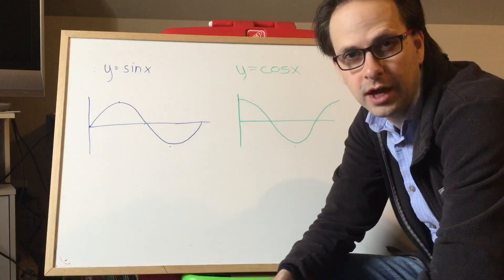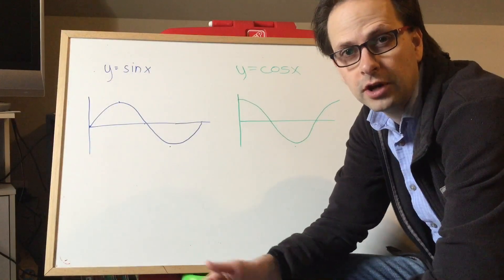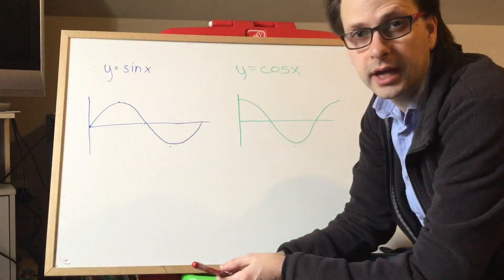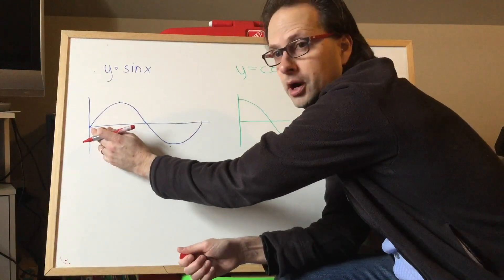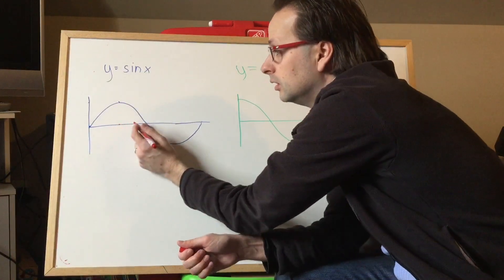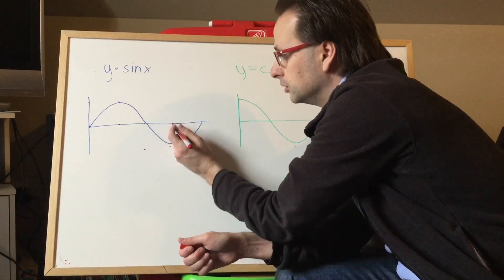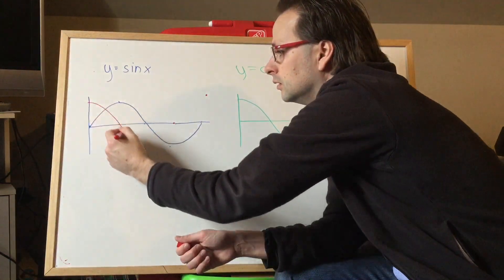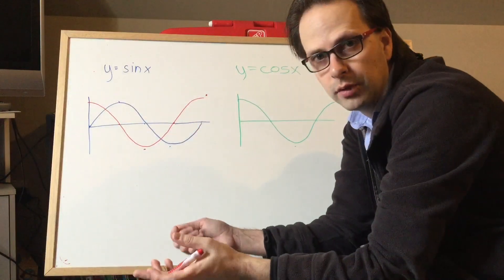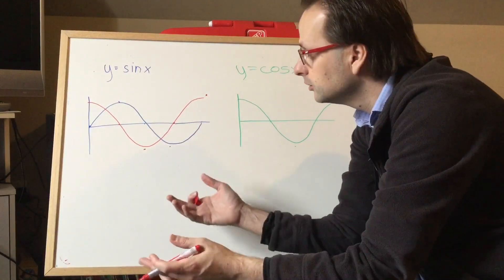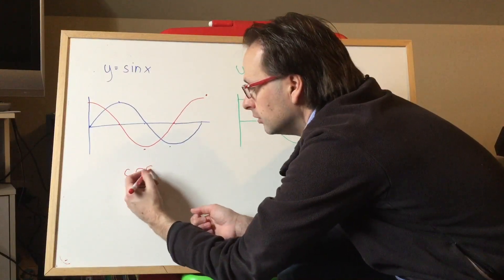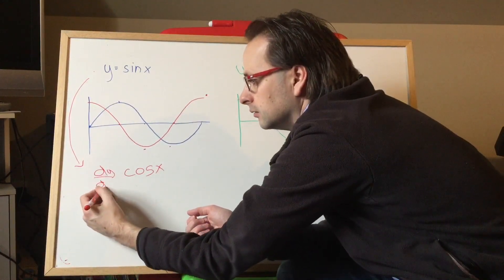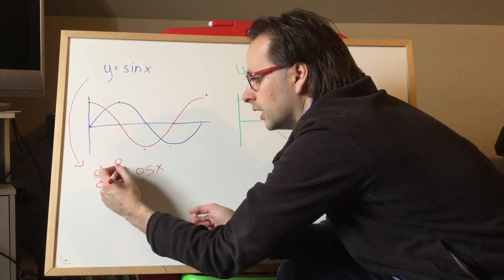Today we're looking at the derivatives of sine and cosine. To start with, let's just do a little graphical investigation. Here's one cycle of sine x. If we were to catalog its slope everywhere: slope is positive to start, then slope is zero, then slope is negative, slope is zero, slope is positive. So graphically the derivative should look something like that. Now what is that graph? Well it looks like the graph of cos x. So our guess is that the derivative of sine x is cos x.